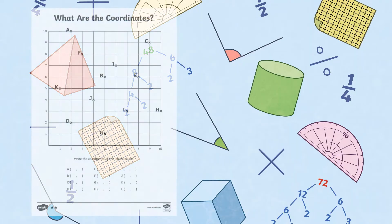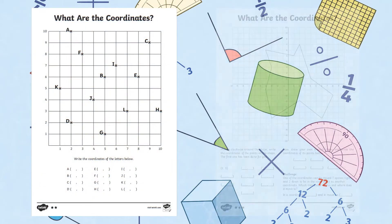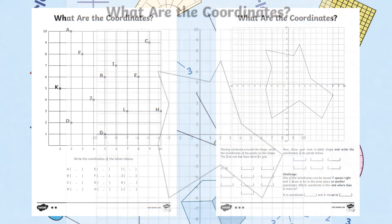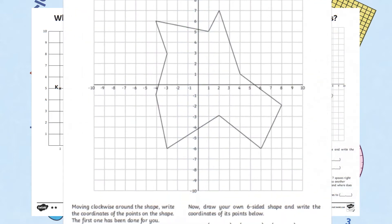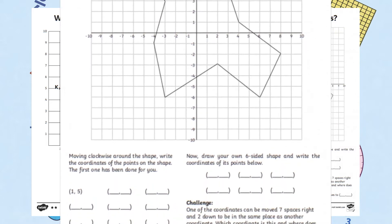These worksheets ask learners to read the coordinates from a single quadrant or all four quadrants. They are also differentiated to ensure they fit the needs of every learner.